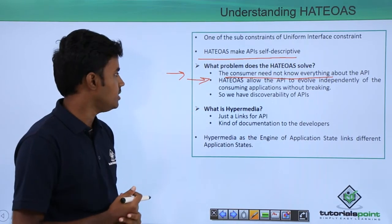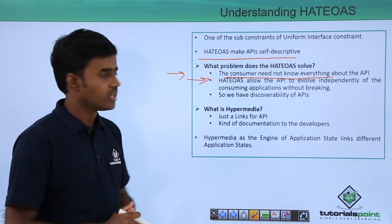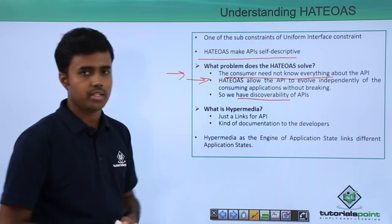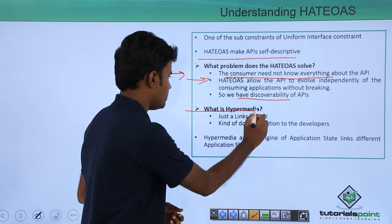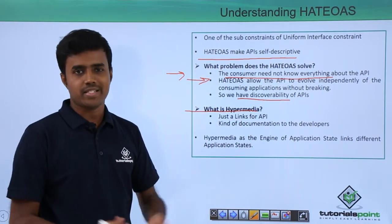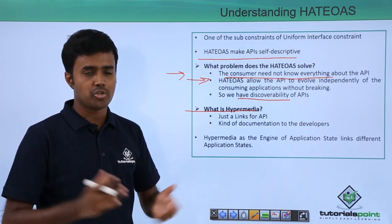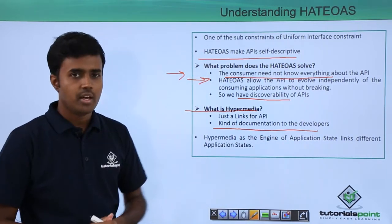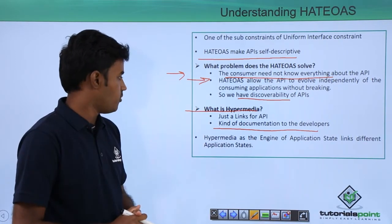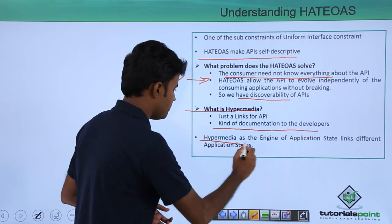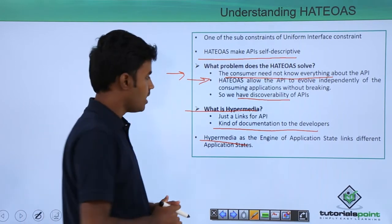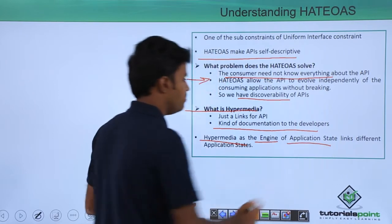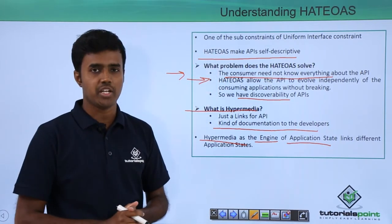So we have discoverability of APIs. What is hypermedia? Hypermedia are just links to your API, kind of documentation to the developers. HATEOAS stands for Hypermedia as the Engine of Application State, where links drive different application states.